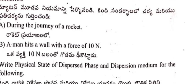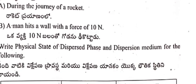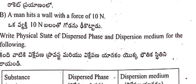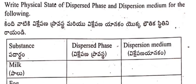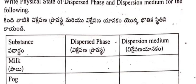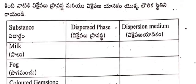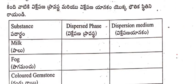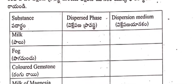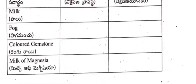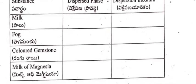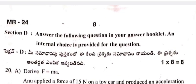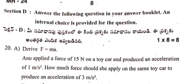Section C has two questions of four marks. Question 18: State Newton's third law. Identify the action and reaction in the following scenarios: during the journey of a rocket, and when a man hits a wall with a force of 10 newtons. Question 19: Write the physical state of dispersed phase and dispersion medium for fog, colored gemstone, and milk of magnesia.